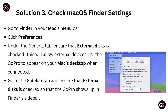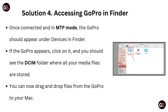Solution 3: Check Mac operating system Finder settings. Go to Finder in your Mac's menu bar and click Preferences. Under the General tab, ensure that external disk is checked — this will allow external devices like the GoPro to appear on your Mac's desktop when connected. Go to the Sidebar tab and ensure that external disk is checked so that the GoPro shows up in Finder's sidebar.